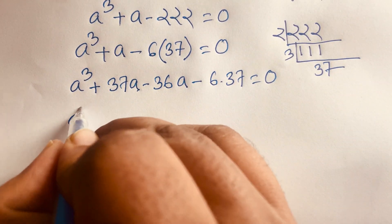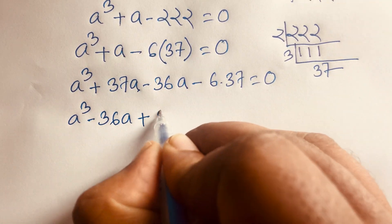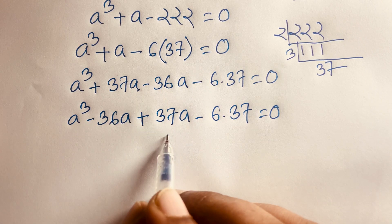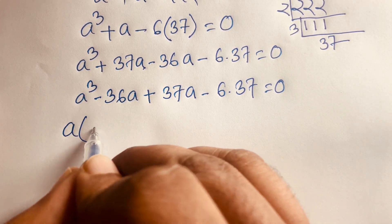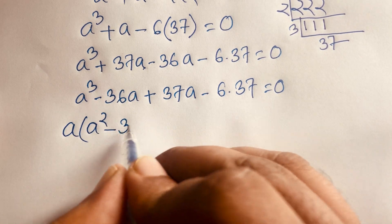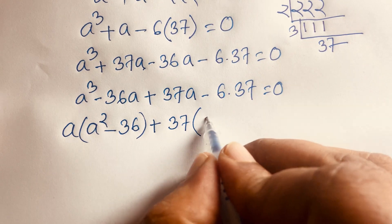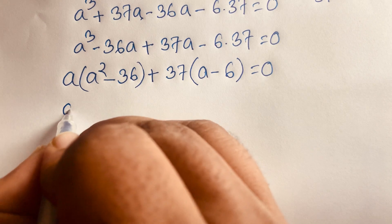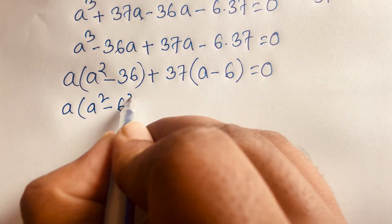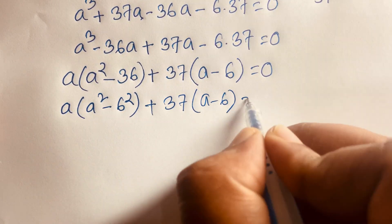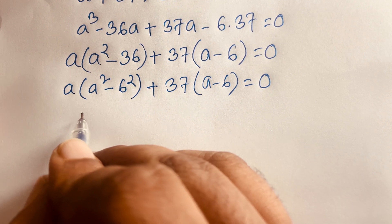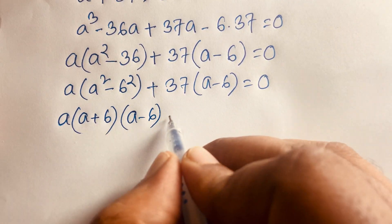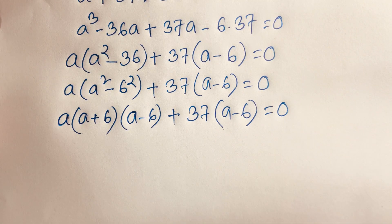Rearranging: a cubed minus 36a plus 37a minus 6 times 37 equals 0. Grouping: a is common in the first pair giving a(a squared minus 36), and 37 is common in the second pair giving 37(a minus 6). Using the difference of squares rule, a squared minus 36 equals (a plus 6)(a minus 6). So we get (a plus 6)(a minus 6) times a plus 37(a minus 6) equals 0.